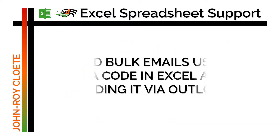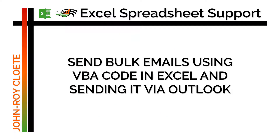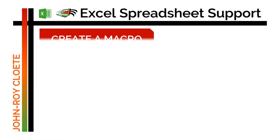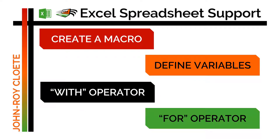In today's tutorial we will be covering how to expand on the previous one of how to create an email with VBA coding, but now we will be sending bulk emails. We will be taking the same code as before, adding a few extra lines and variables, as well as adding a spreadsheet template as our dynamic array. You need to already know how to create macros, how to define variables using the With operator, and we'll be adding the For operator. Download the file from the link in the description and let's get started.